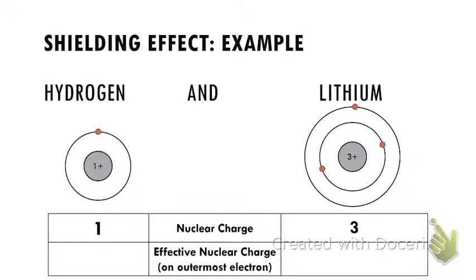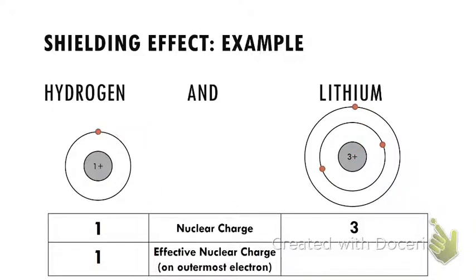The effective nuclear charge is still going to be one for hydrogen. Over here with lithium, because I have three electrons on two different energy levels, these two electrons in the first energy level form a barrier of negative charge — kind of a negative-two shell. As this positive-three charge from the nucleus tries to reach out to that outermost electron, that outermost electron really only feels one proton pulling on it. The other two have been canceled out by those two inner electrons forming that barrier. They're moving so fast it's like a shell of negative charge.